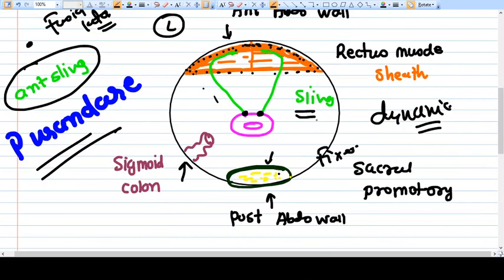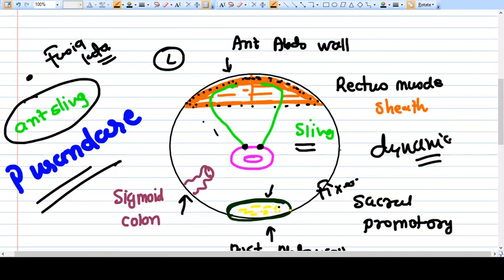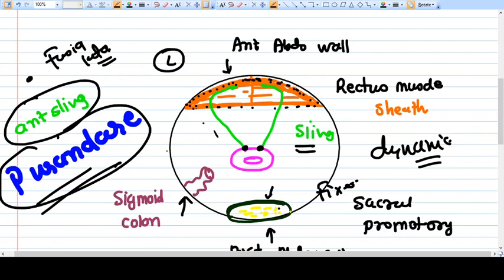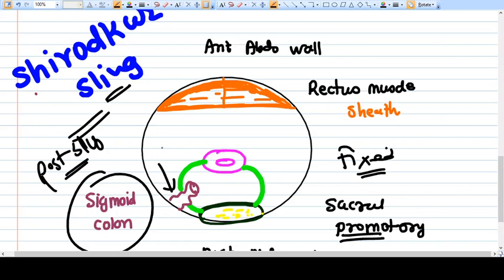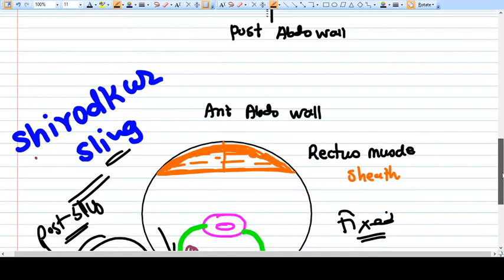Now which is a good surgery between Purandare or Shirodkar? There is confusion. Purandare is not a very effective surgery compared to the Shirodkar sling. But Shirodkar has more complications due to interference with the sigmoid colon and mesentery. So if you want the best result, go for Shirodkar sling. But if you want to decrease complications, go for Purandare surgery. This was all about the sling surgery. Thank you.